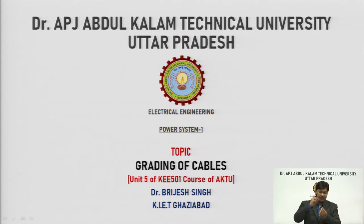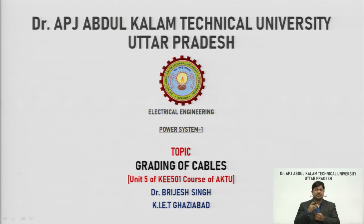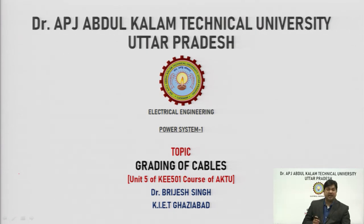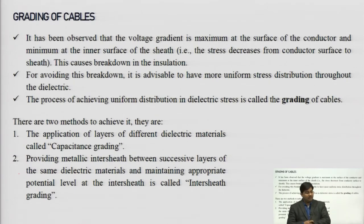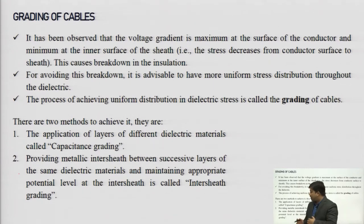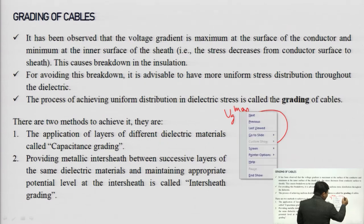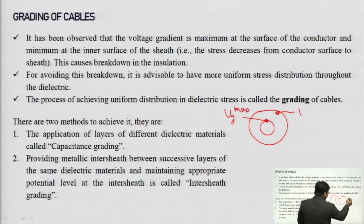The insulation from the center part to the upper surface is varying — it is not constant. Because of that, the dielectric stress in the radial direction from the inner side is different, and the voltage distribution across the entire insulation layer is non-uniform. At the core surface, the voltage gradient is maximum (g_max), and at the inner surface of the sheath it is minimum (g_min).